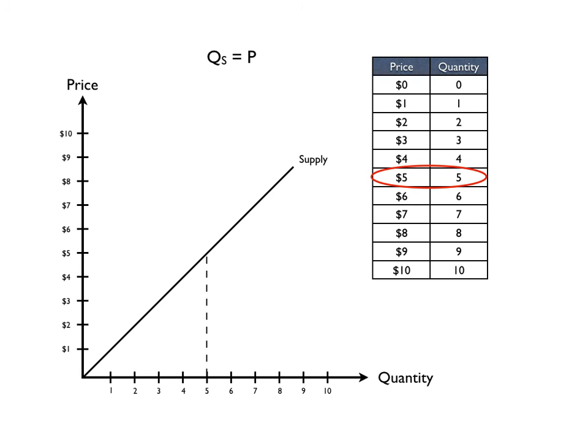When we look at a price of five and a quantity of five, this is the total revenue that the firm receives for those five units. They sell five units at five dollars a piece. That's $25 as total revenue.